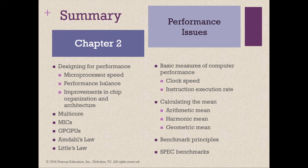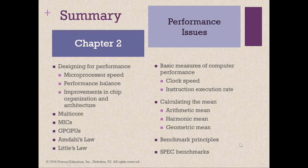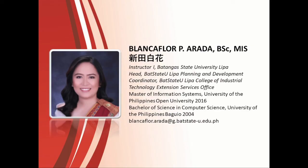In summary, Chapter 2 covered: designing for performance including microprocessor speed, performance balance, and improvements in chip organization and architecture; multi-core, MIC, and GPUs; Amdahl's Law and Little's Law; basic measures of computer performance such as clock speed and instruction execution rate; calculating the mean using arithmetic, harmonic, and geometric means; and benchmark principles and SPEC benchmarks. This is the end of our lecture for Chapter 2, Performance Issues. I hope you've learned something about how we measure the performance of a computer system. Thank you very much, good day, and stay safe.